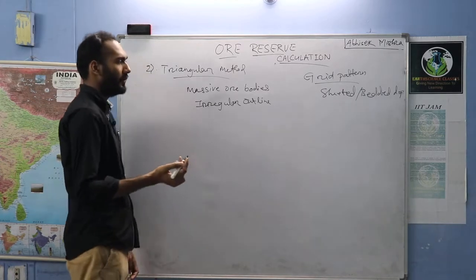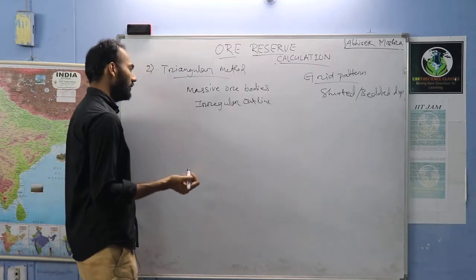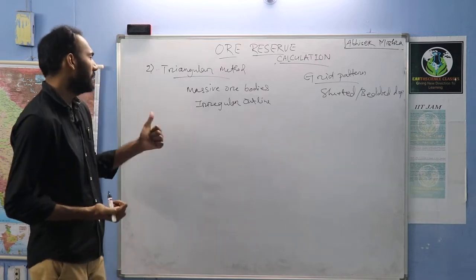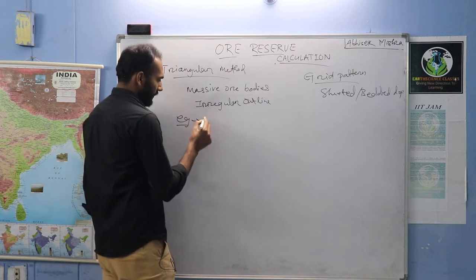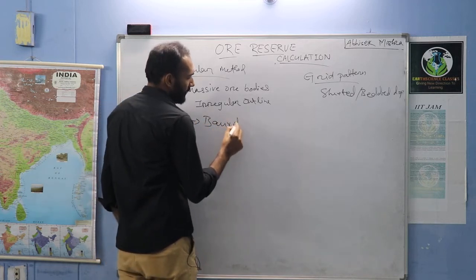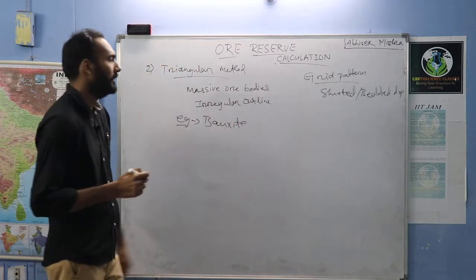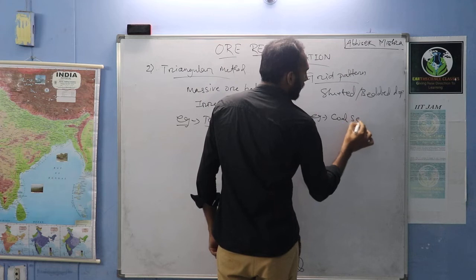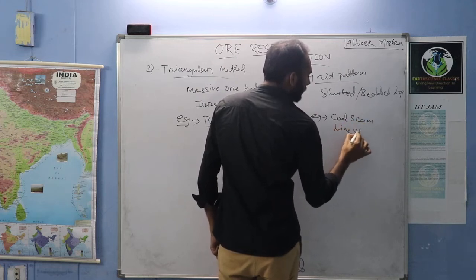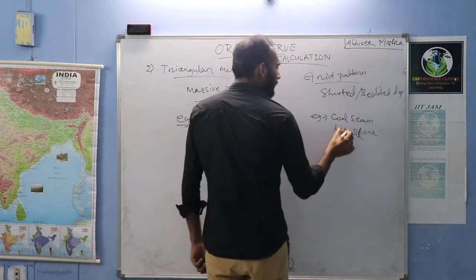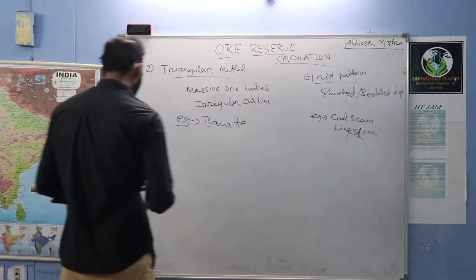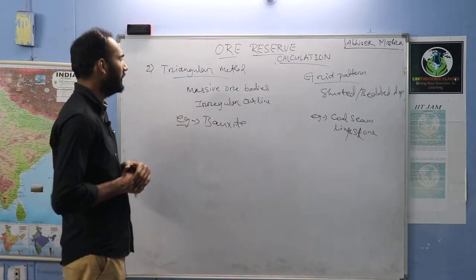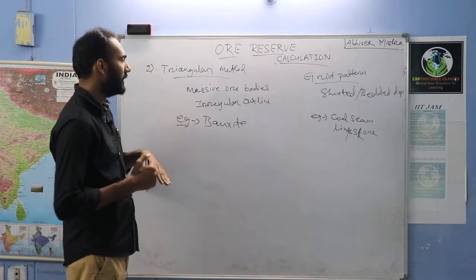For example, questions can be asked in MCQ type questions about which method is preferable for a given deposit type. For triangular method, we use it for bauxite-like deposits or sulfide deposits — massive and irregular. For coal seams or limestones, which have a regular outline, we use the grid pattern. For massive irregular deposits we use the triangular or polygonal method, which I will discuss later.